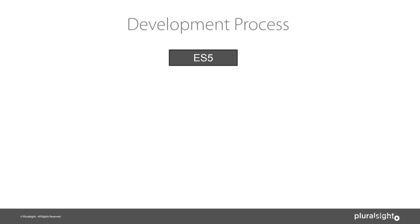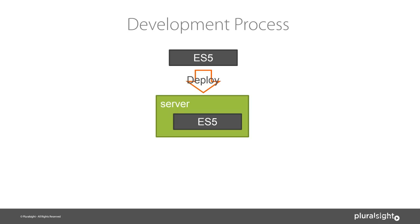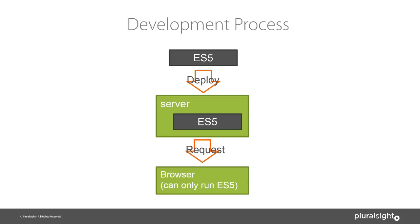Our typical development process for a web app is that we write our code in ECMAScript 5, the JavaScript that browsers currently run. We take that code and deploy it to the server, and then a browser comes along and makes a request. Browsers today run ES5 — with a few exceptions, current modern-day browsers are starting to support some ES6 features, but we can only count on them running ES5 at this time.